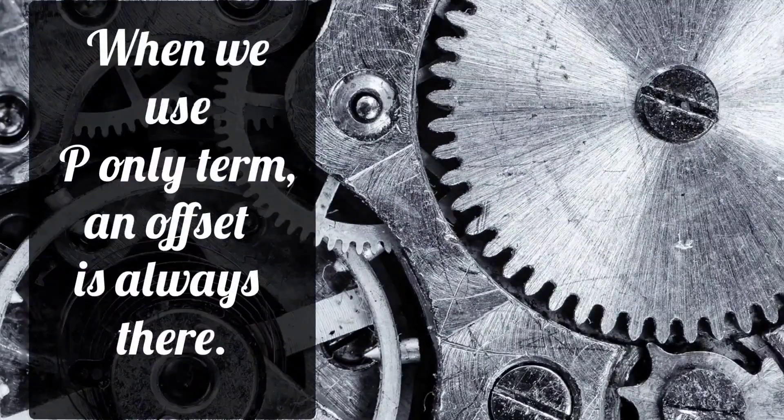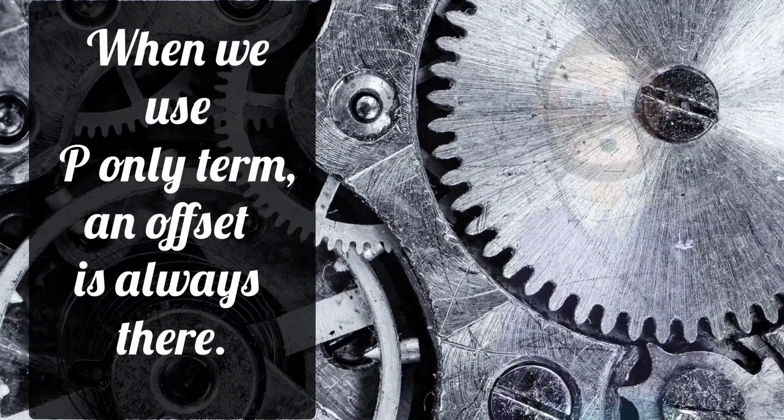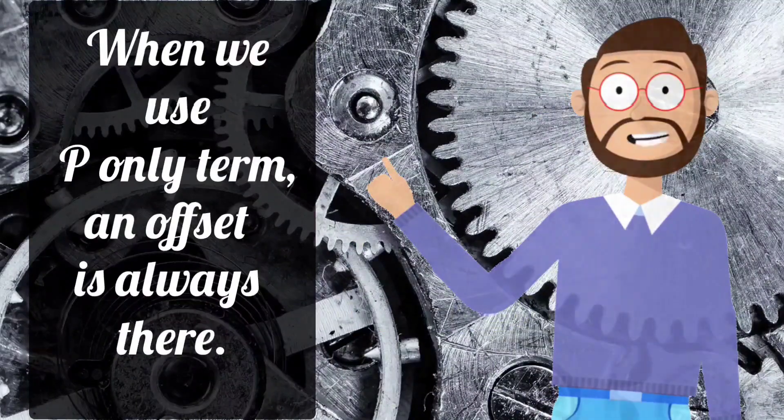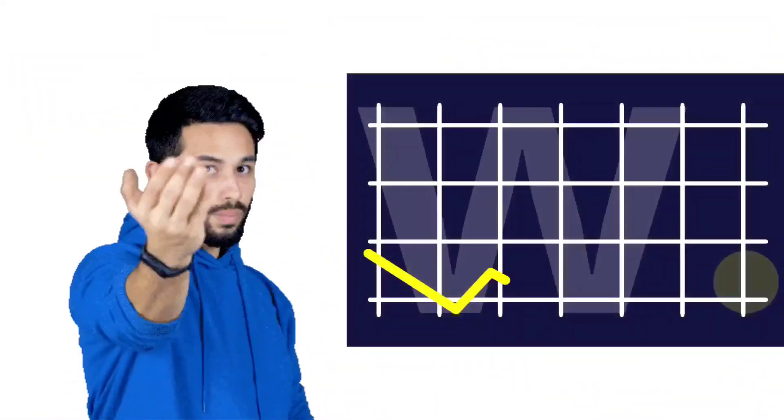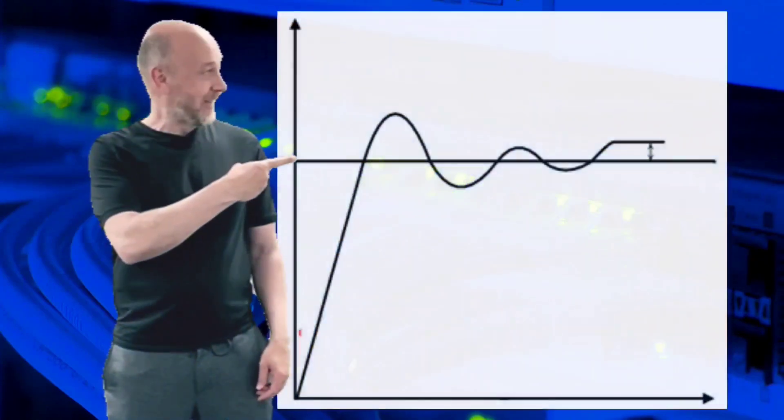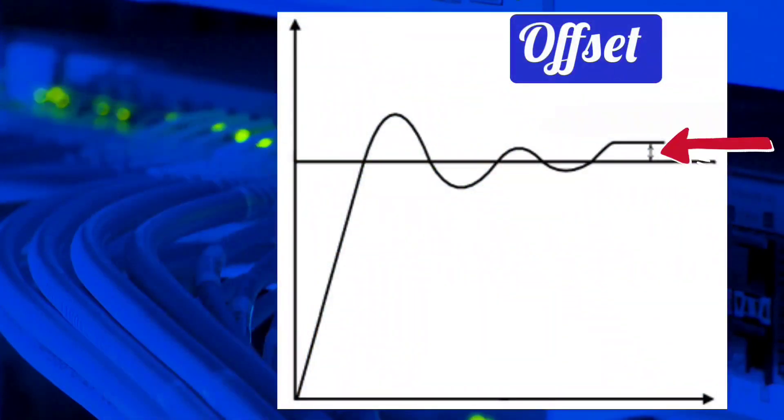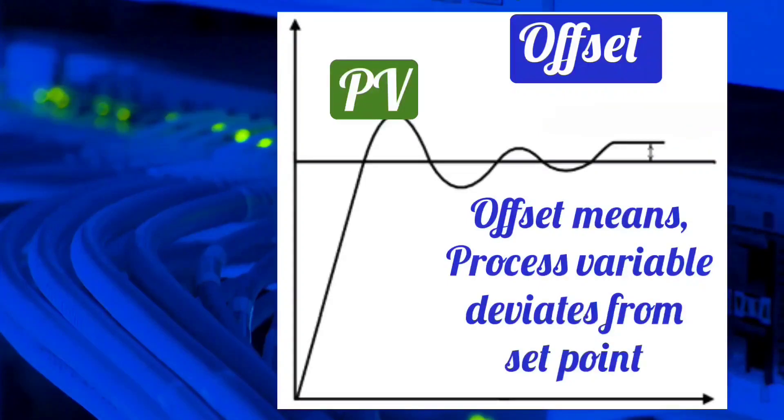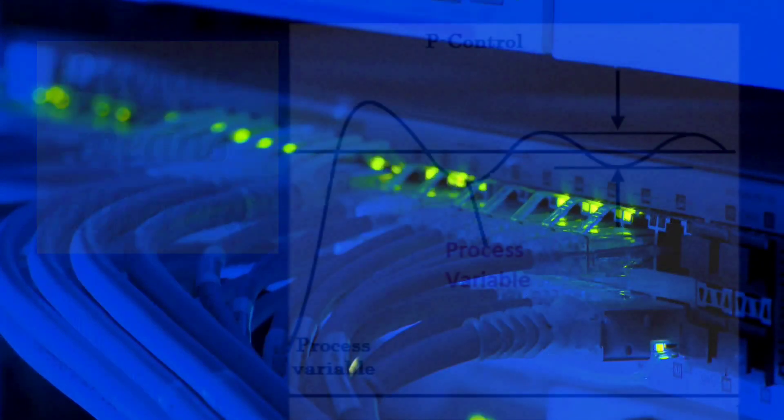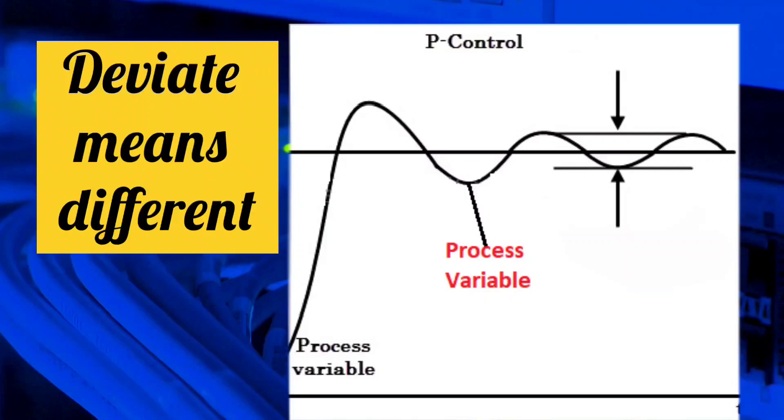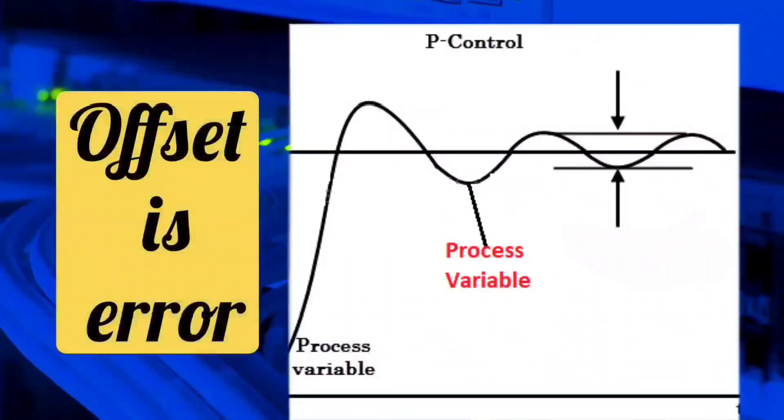When we use only P term in PID controller, an offset is there. To understand this offset, you can see this graph. Like, see this. Offset means the process variable deviates from the set point. Deviate means to be different. So offset is the error.